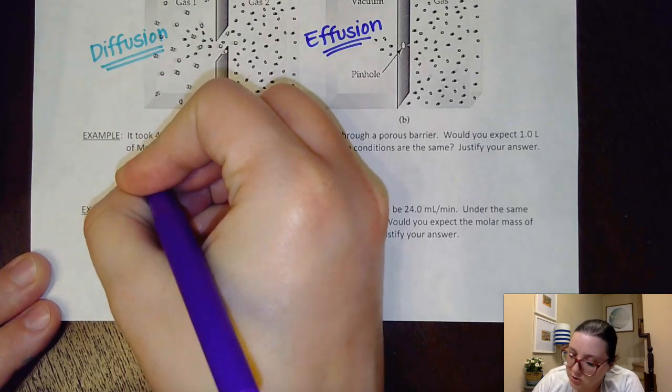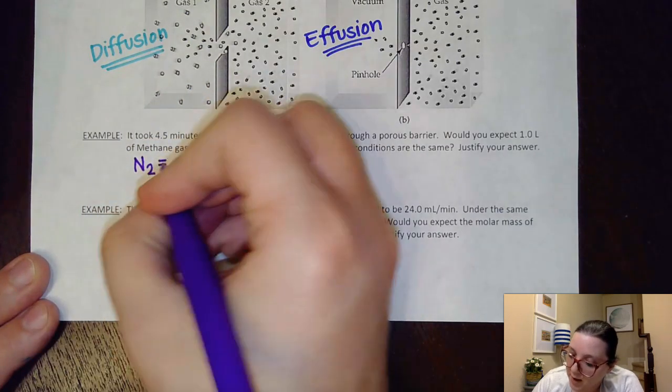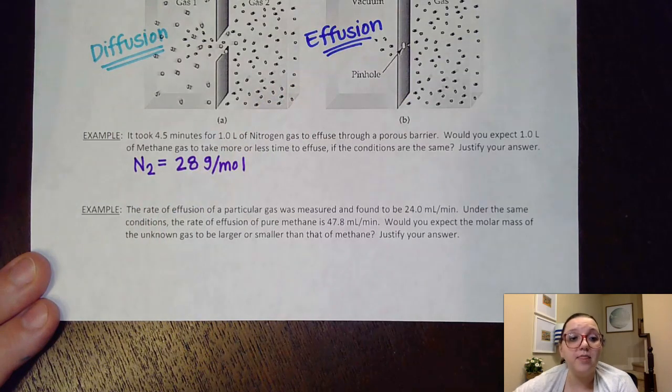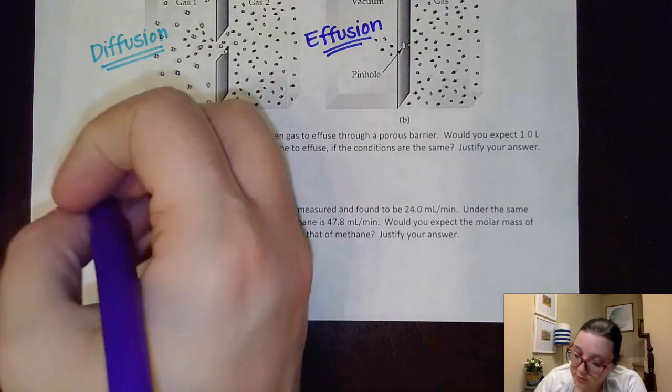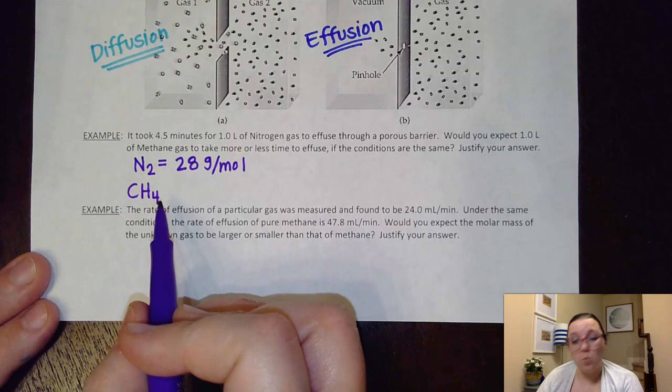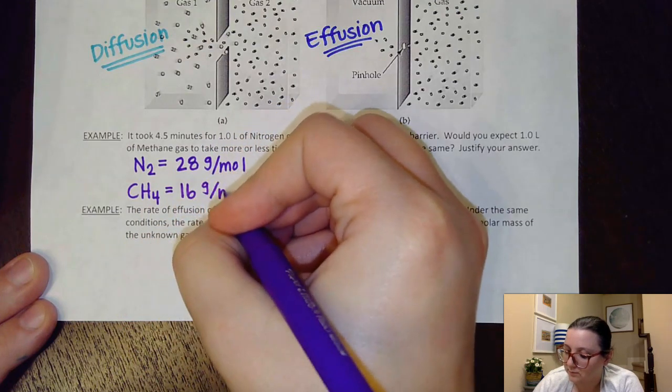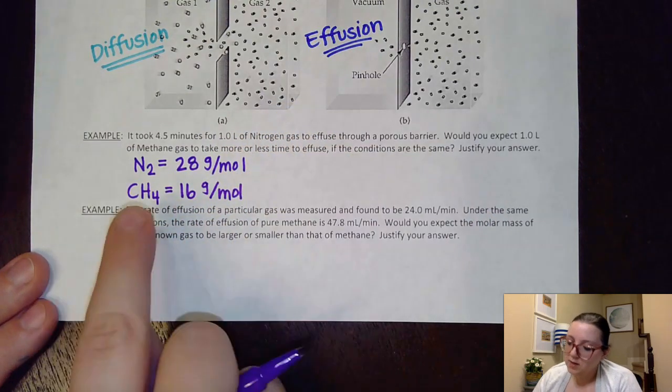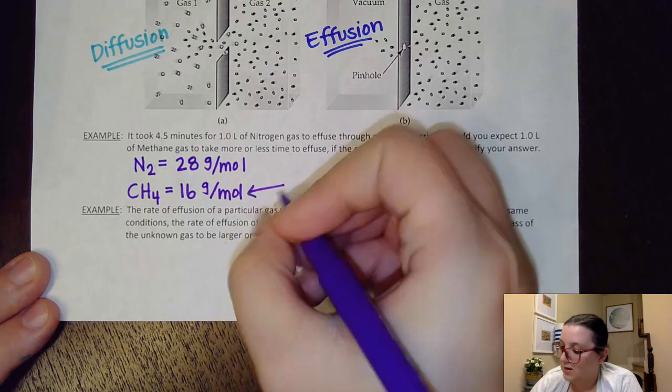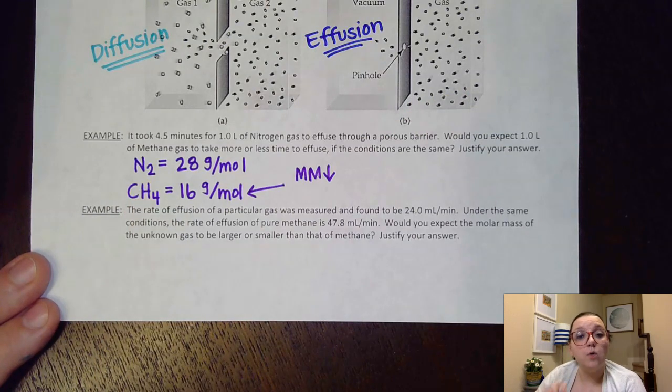So for nitrogen N2, since each nitrogen is about 14 grams per mole each, that would have a molar mass of around 28 grams per mole. On the other hand, methane is CH4, for those of y'all that were not familiar with that. Carbon is about 12. Each hydrogen is about one gram per mole. And so that gives me a molar mass roughly about 16 grams per mole. And so if I want to compare the methane to the nitrogen gas, I would say, well hey, methane has a lower molar mass in comparison to N2.